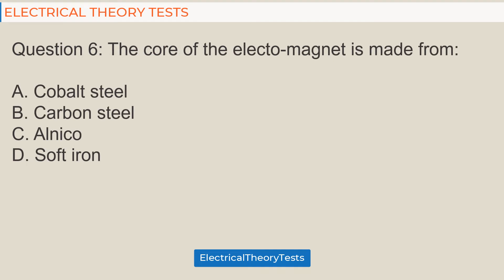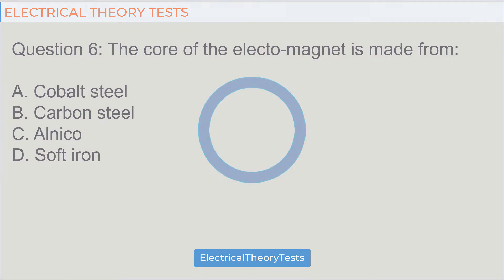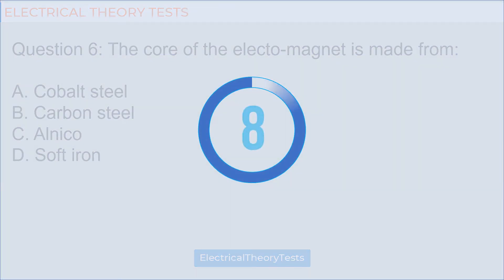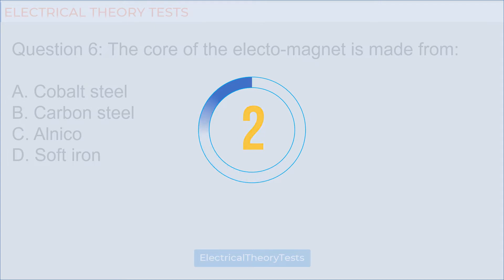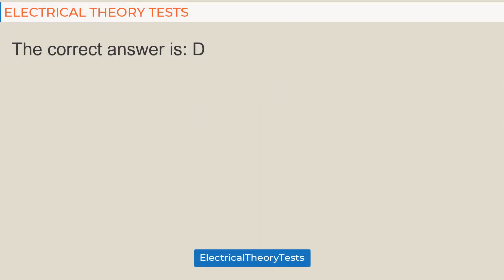Question 6: The core of an electromagnet is made from — a) cobalt steel, b) carbon steel, c) alnico, d) soft iron. The correct answer is d) soft iron.